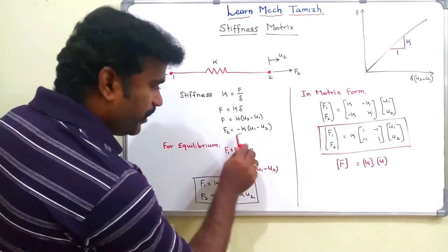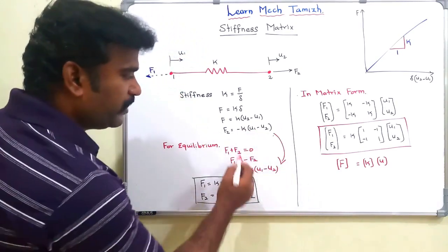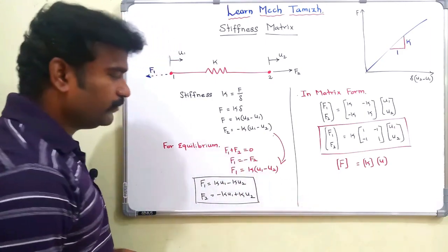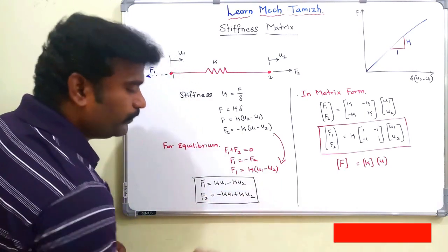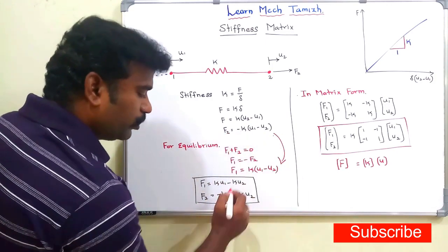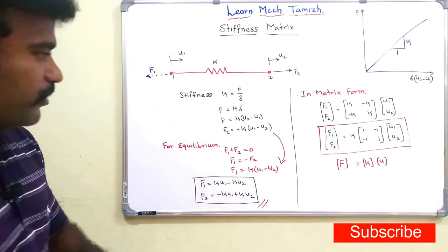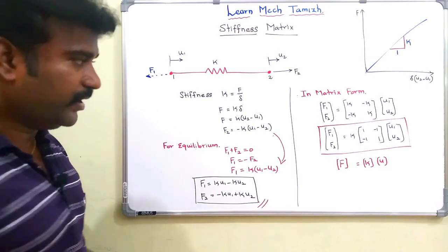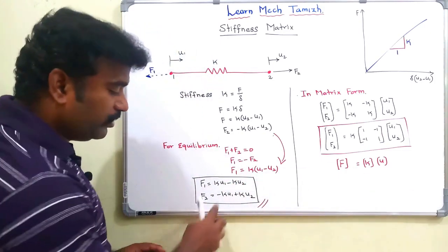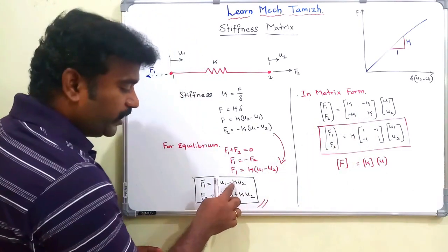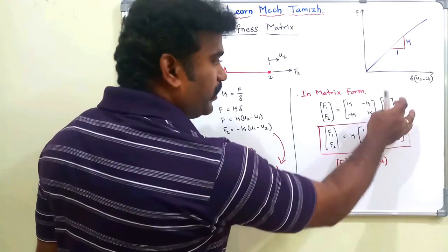F2 is already defined as minus K into (U1 minus U2). Since F1 equals minus F2, we get F1 equals K into (U1 minus U2), so F1 equals K·U1 minus K·U2. And F2 equals minus K·U1 plus K·U2. Now we have a matrix formula with these two equations. F1 and F2, with U1 and U2.